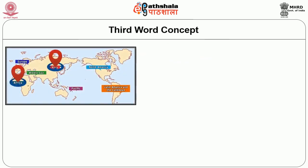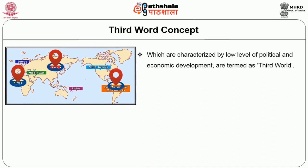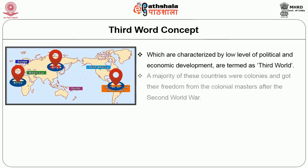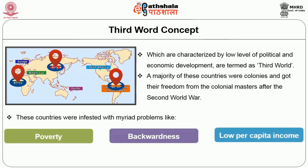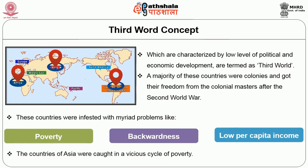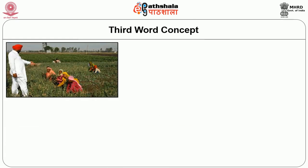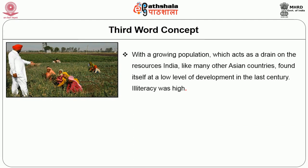The countries of Asia, Africa and Latin America, characterized by low level of political and economic development, are termed as the third world. A majority of these countries were colonies and got their freedom from the colonial masters after the Second World War. These countries are infested with problems like poverty, backwardness, low per capita income and very large agrarian sectors. The countries of Asia were caught in a vicious circle of poverty, and colonial domination made matters worse for common people, who were exploited by both landlords and colonial masters.